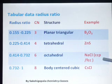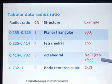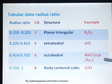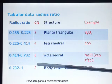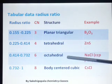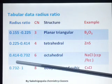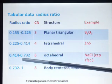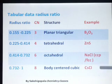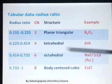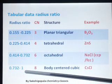NaCl is an ionic compound with a cubic close packing, also called face-centered packing. In this type of question, the coordination number and geometry are asked. You have to remember: coordination number is 6, geometry is octahedral, with a radius ratio in the range 0.414 to 0.732.